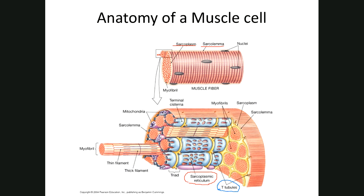You can see the T-tubules as yellow lines paralleling the sarcoplasmic reticulum. T-tubules means transverse tubule; they go from one side to the other and are made of sarcolemma running through the cell. On either side of each T-tubule is sarcoplasmic reticulum.